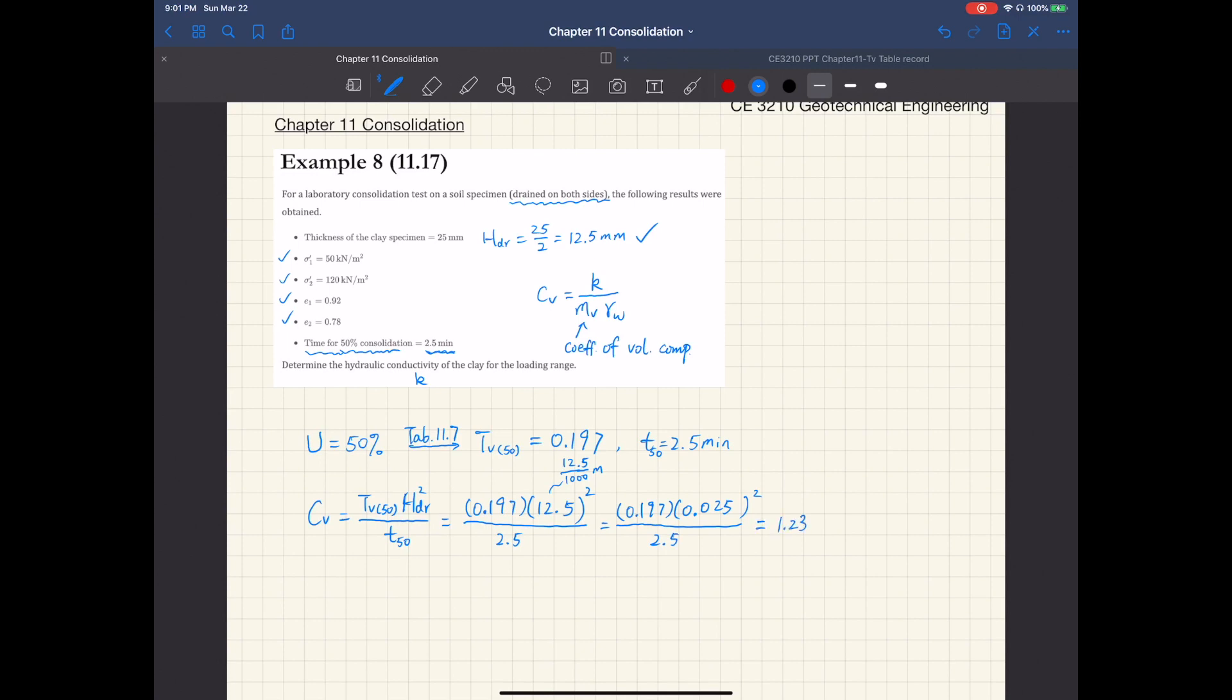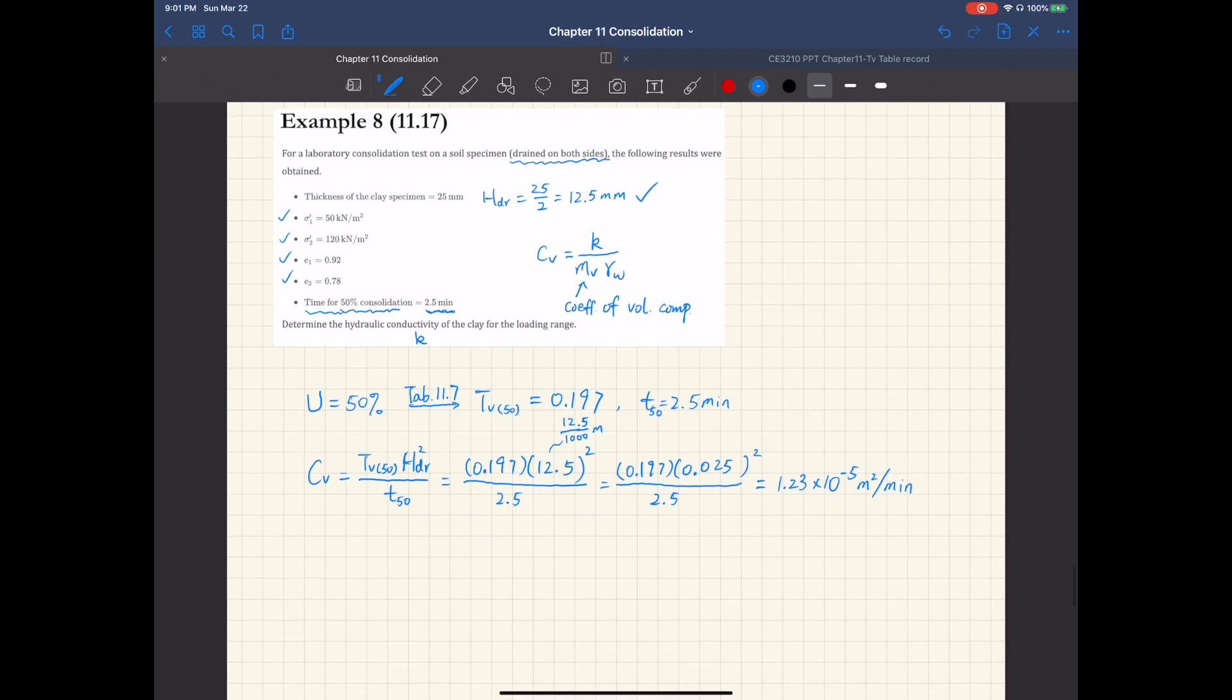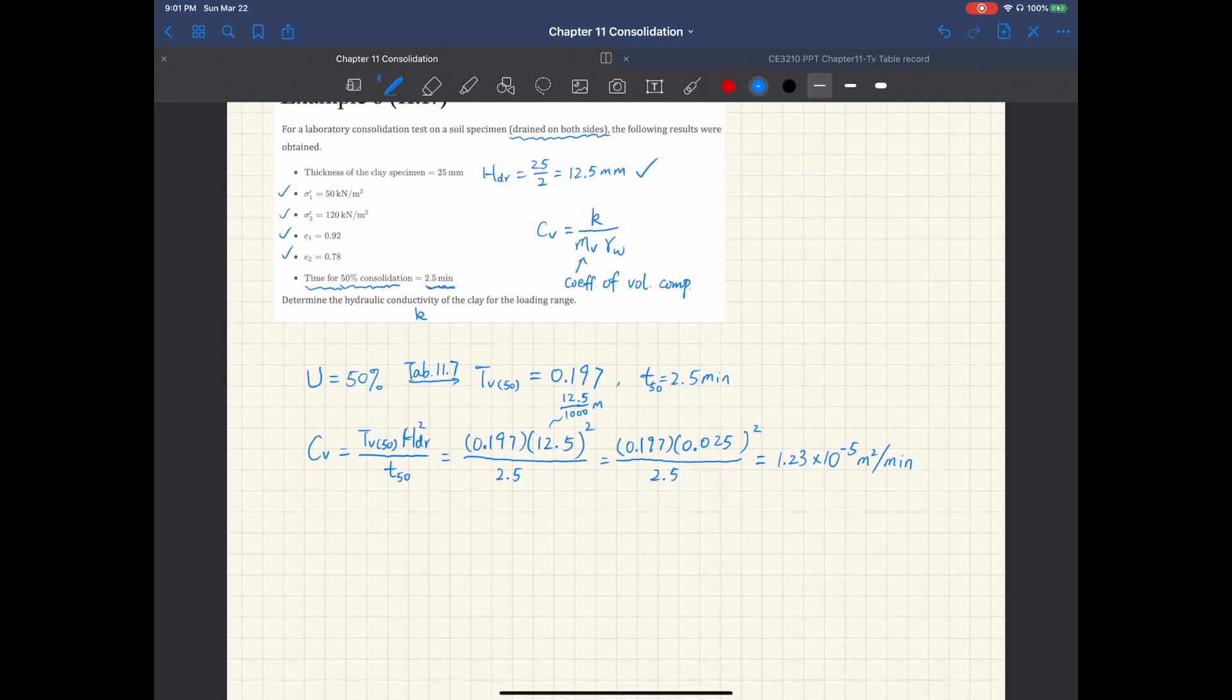So the coefficient of consolidation is 1.23 times 10 to negative 5 meter squared per minute. Once we have c sub v...